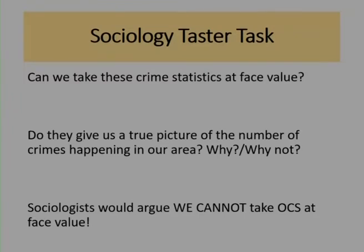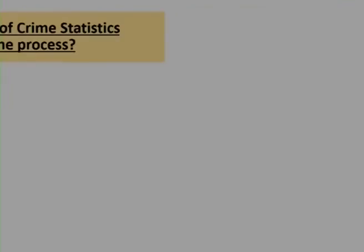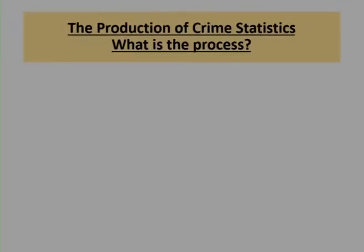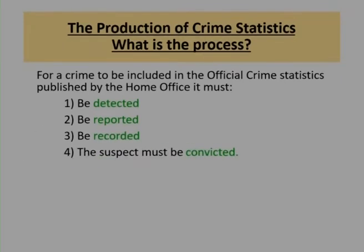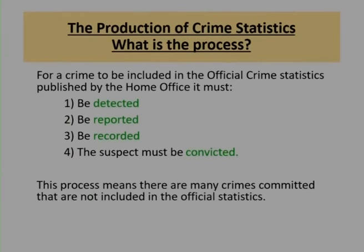In order to understand why sociologists are wary of official crime statistics, you have to understand the process by which crime statistics are formed. For a crime to actually be included in the Home Office statistics, it must be detected, it must be reported, it must be recorded by the police, and the suspect must be convicted. By just thinking about that process, you can see that many crimes committed actually never find their way into the official statistics.